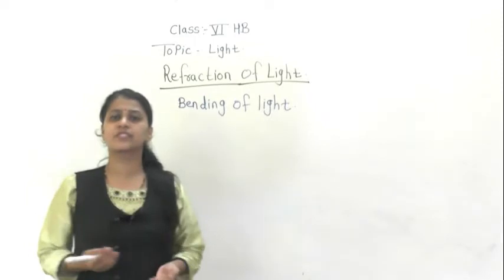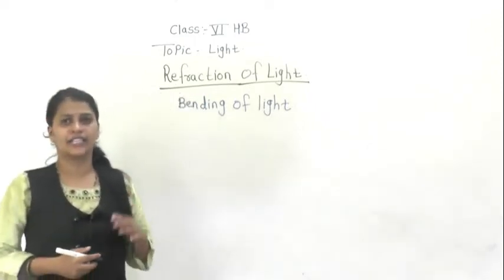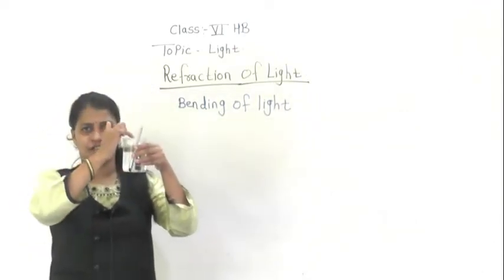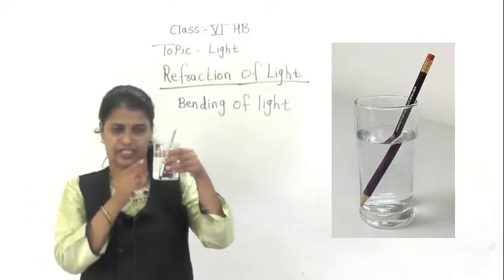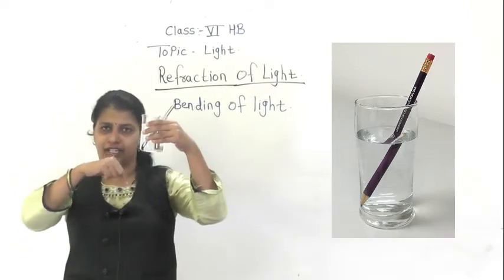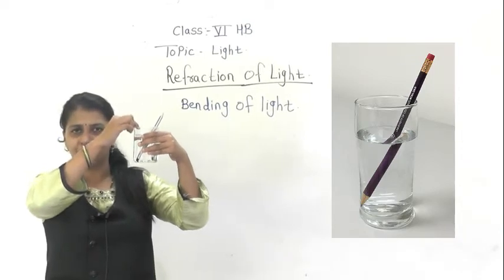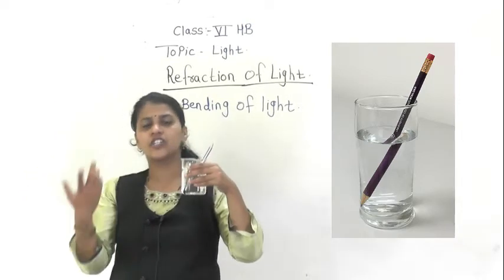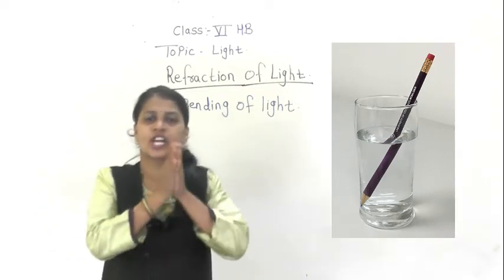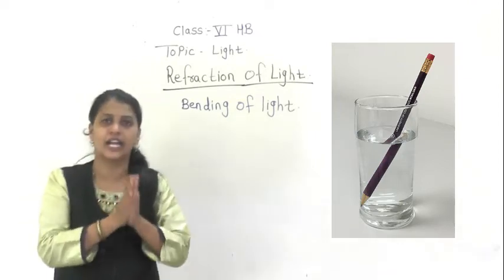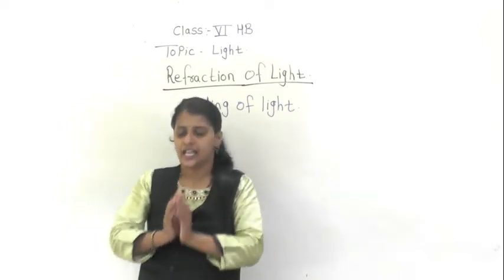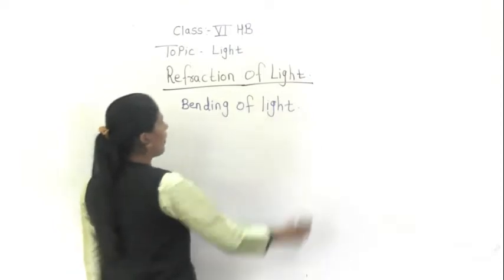There are some terms related to the refraction of light. The light rays that fall on a particular object are called incident rays. When the incident ray falls on a particular medium — from air it changes to water — it changes direction. That process is called the refraction of light.